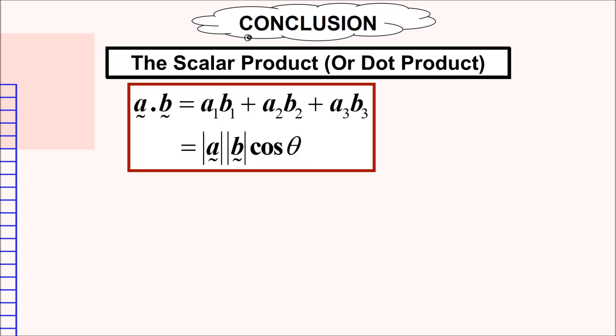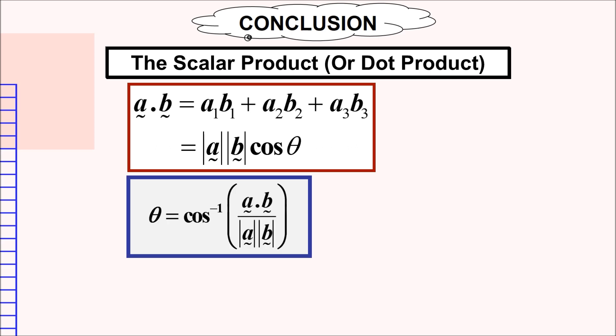Now, let us look at the conclusion for subtopic 5.2. The first one that we have already learned is the scalar product or dot product. It is given by the formula of a1 times b1 plus a2 times b2 plus a3 times b3 also can be defined as magnitude a times magnitude b times cos theta. From the formula of the dot product, we can also find the angle between two vectors. So, the angle between two vectors, theta, is given by cos inverse of a dot b divided by magnitude a times magnitude b.